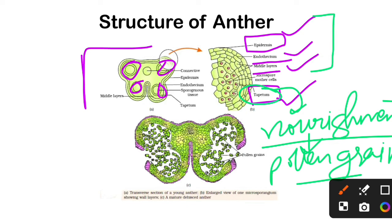The tapetum is the innermost and most nutritive layer. The first 3 layers — epidermis, endothecium, and middle layers — help with protection and dehiscence. Now we have one sporogenous tissue, which is a group of cells compactly arranged. Sporogenous tissue is located in the center of the microsporangium. In the mature dehiscent anther, the pollen grains are released.